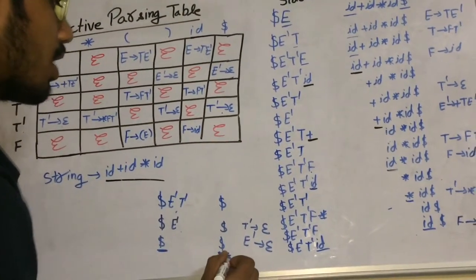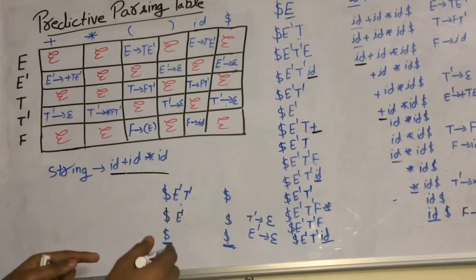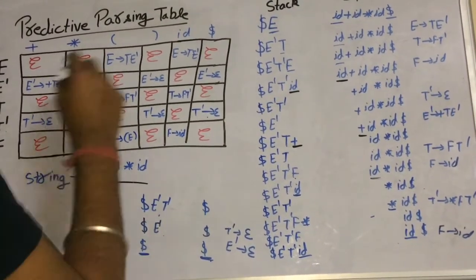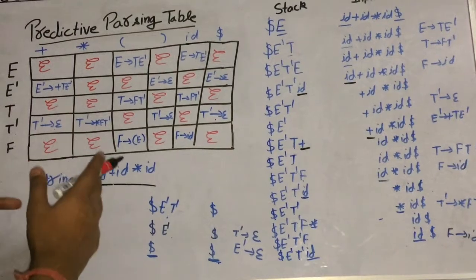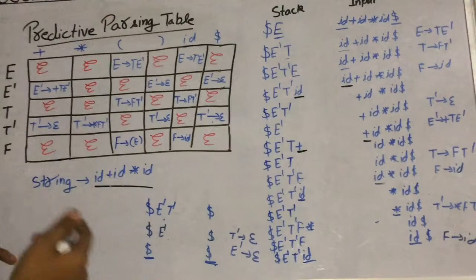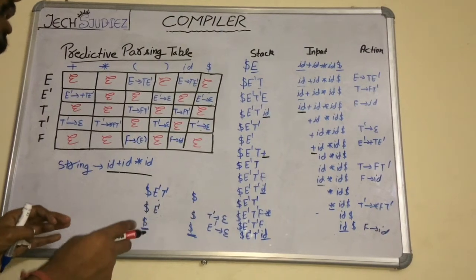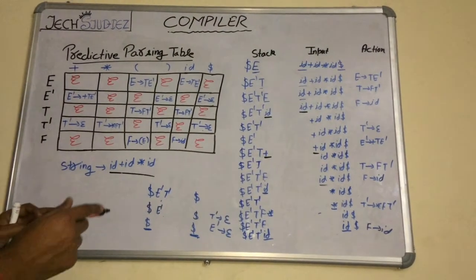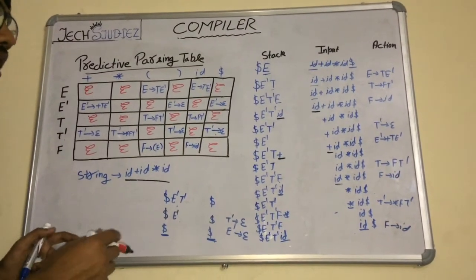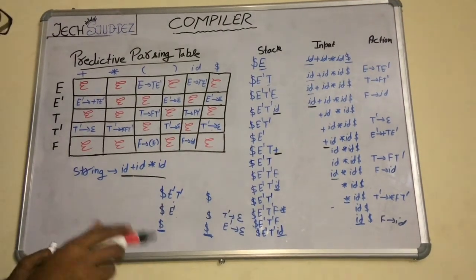Our whole string has been parsed and there is no error in between. So we can say that this string can be parsed from this predictive parsing table. This is all about predictive parsing tables and string parsing. In the next video, I will take another example with FIRST, FOLLOW, and all the rules. If you have any problem, comment in the comment box — notes are also available in the description.